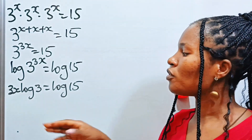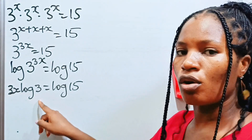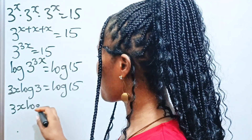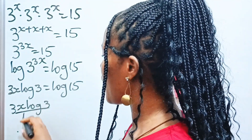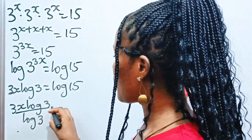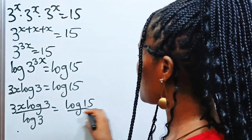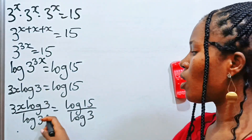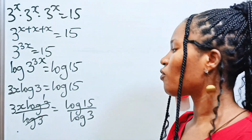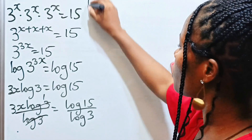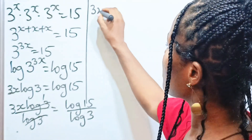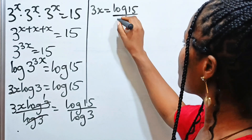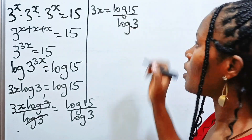Now because we are looking for the value of x, let's divide both sides by log 3. So we have 3x·log 3 divided by log 3 equals log 15 divided by log 3. When log 3 divides itself we have 1, so 3x times 1 gives us 3x is equal to log 15 divided by log 3.